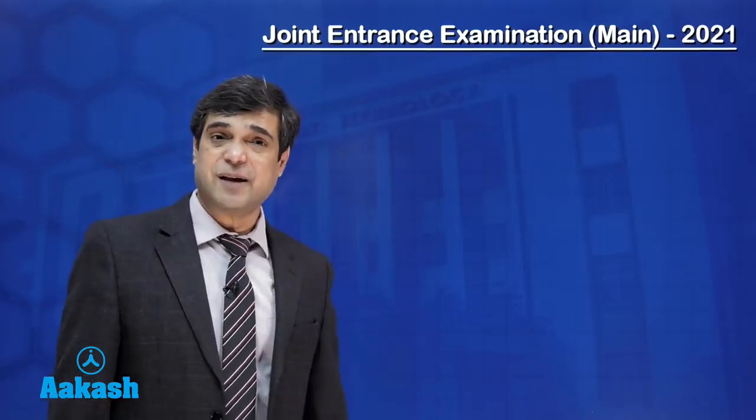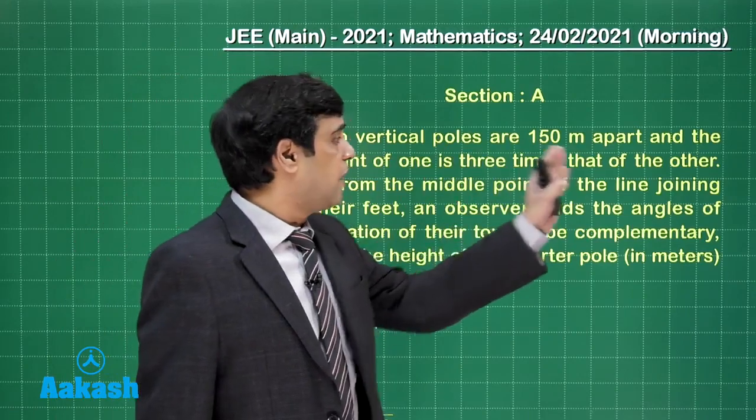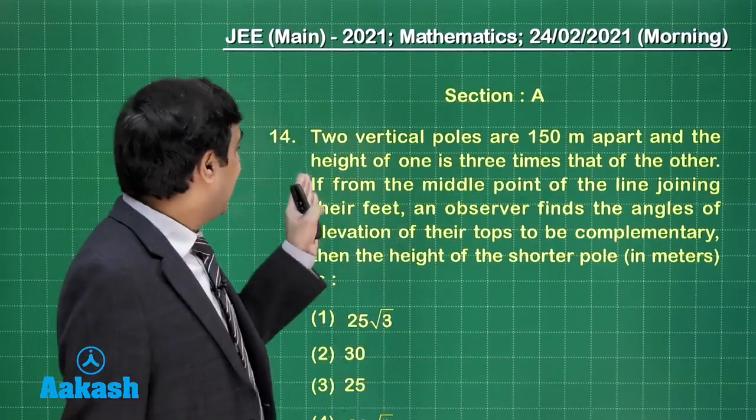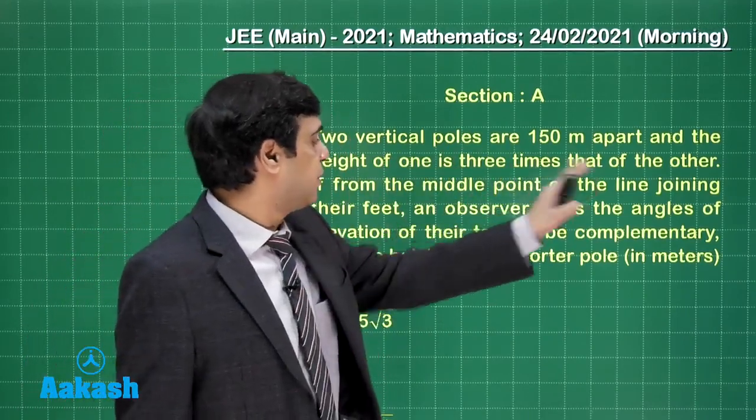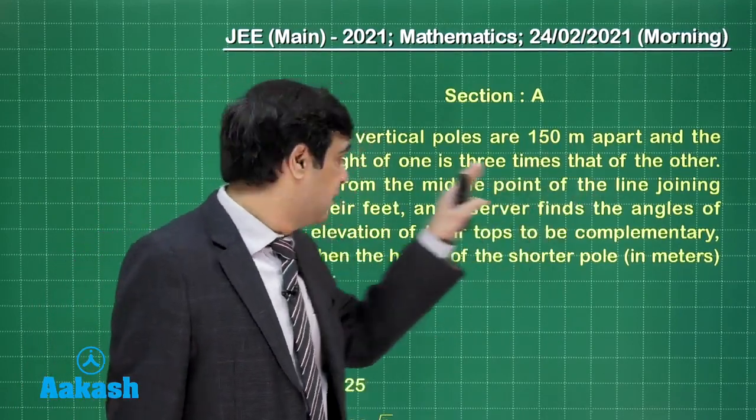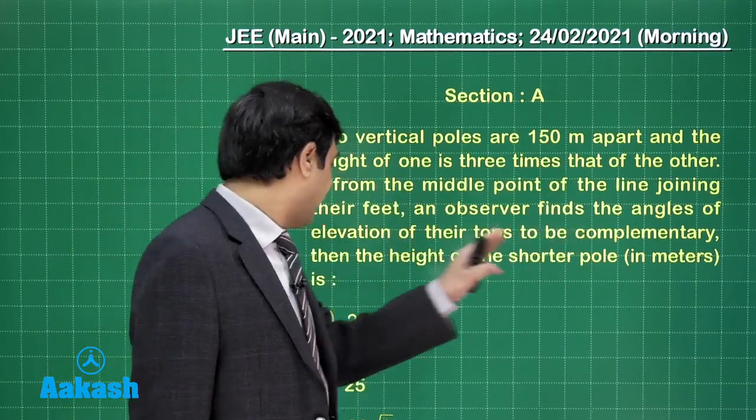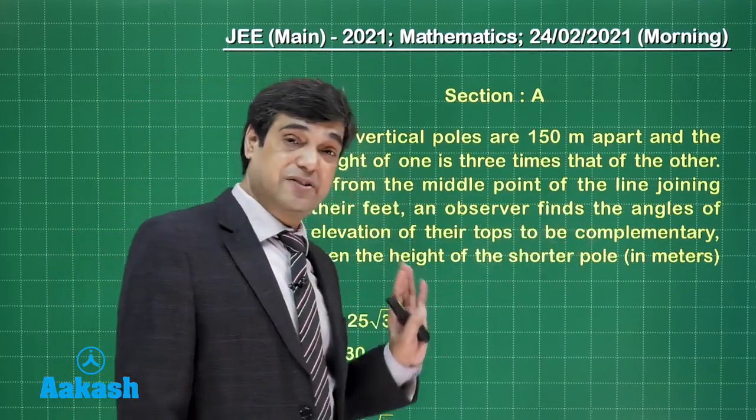Now moving forward, let's take up the next one, question number 14. Two vertical poles are 150 meters apart and the height of one is three times that of the other. If from the middle point of the line joining their feet, an observer finds the angle of elevation of their top to be complementary.